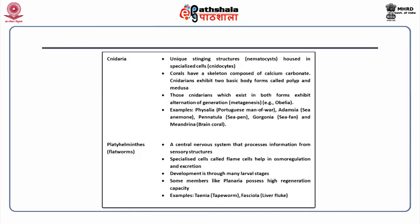Phylum cnidaria have unique stinging structures called nematocysts housed in specialized cells called cnidocytes. Corals have a skeleton composed of calcium carbonate. Cnidarians exhibit two basic body plan forms called polyp and medusa. Those cnidarians which exist in both forms exhibit alternation of generations called metagenesis, for example obelia. Examples of this phylum include physalia, adamsia, pennatula, gorgonia and meandrina.